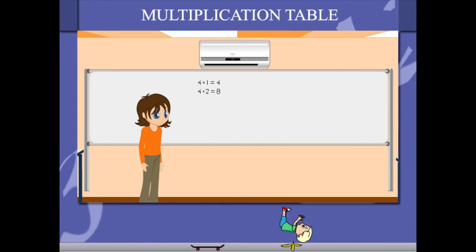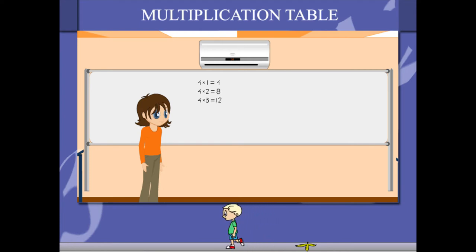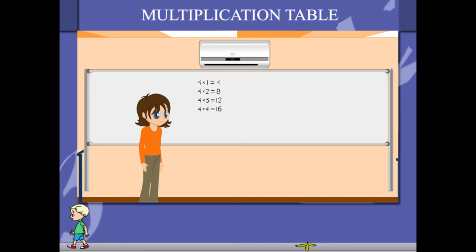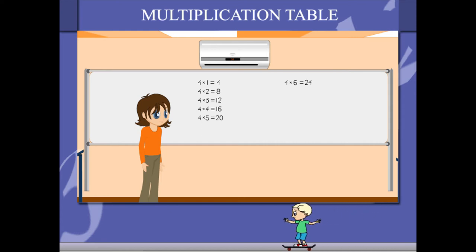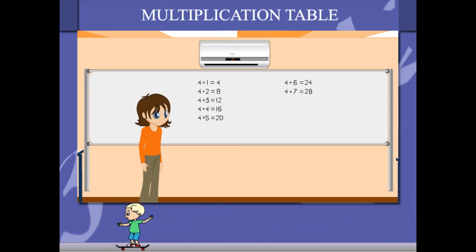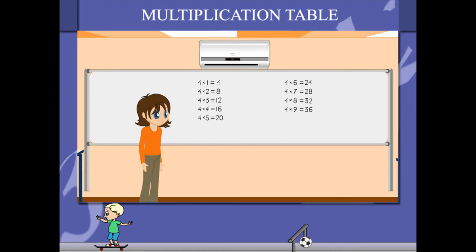4 1's are 4, 4 2's are 8, 4 3's are 12, 4 4's are 16, 4 5's are 20, 4 6's are 24, 4 7's are 28, 4 8's are 32, 4 9's are 36, 4 10's are 40.